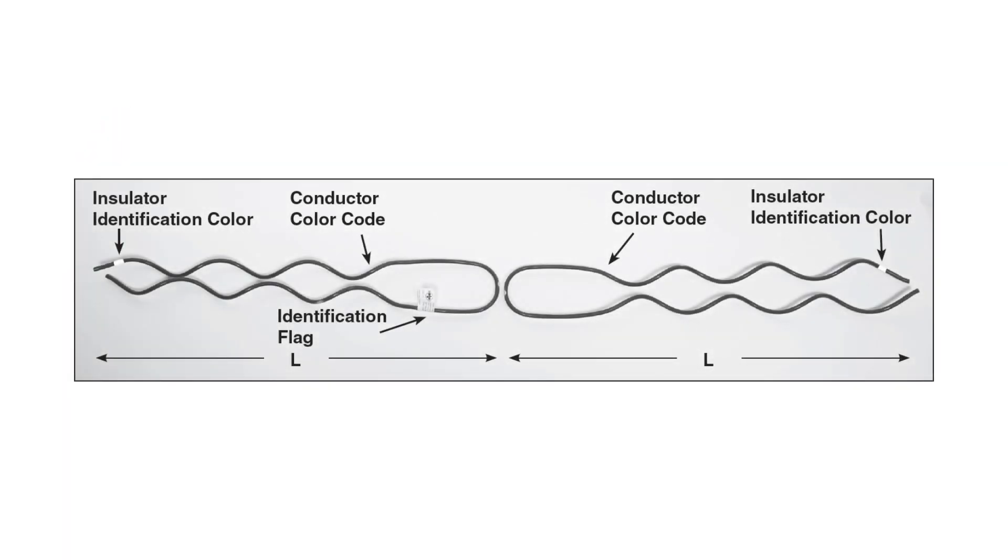Every coated double support tie is equipped with at least two color codes and an identification flag. The color mark on the end of the leg represents the insulator head designation. The color mark nearest the center of the loop represents the conductor range of the tie.